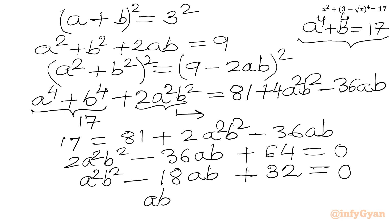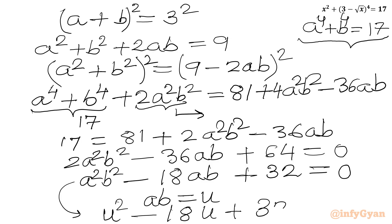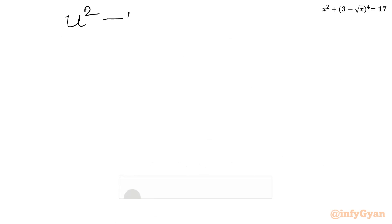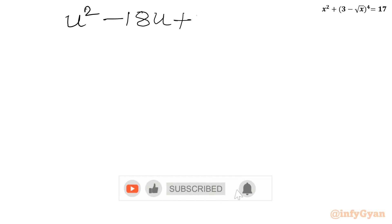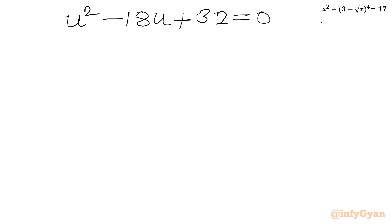Dividing the equation by 2: a²b² minus 18ab plus 32 equals 0. We let u equal ab, so our equation becomes u² minus 18u plus 32 equals 0, where u equals a times b and a equals √x.